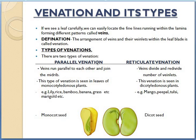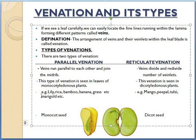Example of parallel venation — where can you see parallel venation, on which leaves? Examples are lily leaf, rice leaf, bamboo leaf, banana leaf, grass leaf, etc. You can see parallel venation in these leaves.